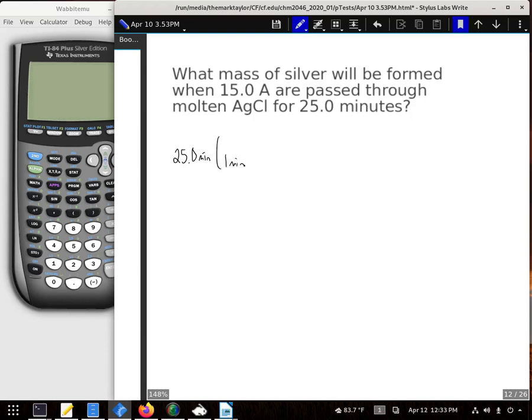So one minute is 60 seconds and amps are actually coulombs per second. Doing that, our seconds cancel out and the minutes cancel out. And then Faraday told us that there's 96,485 coulombs in a mole of electrons.